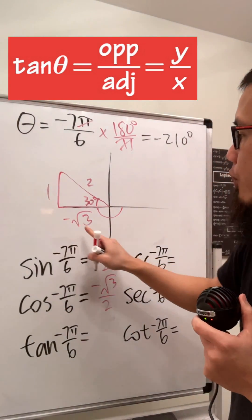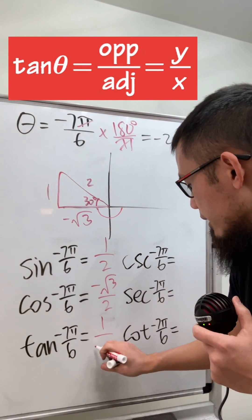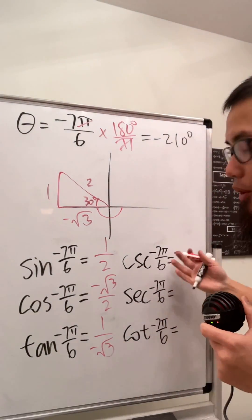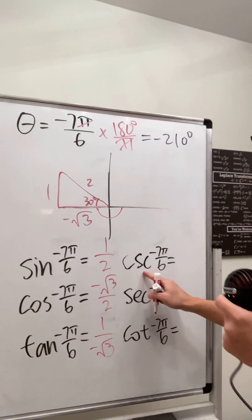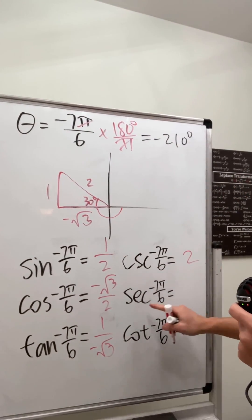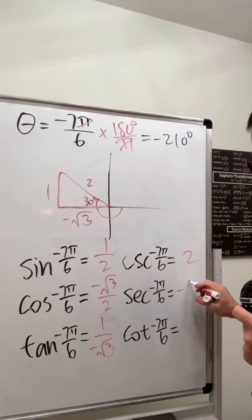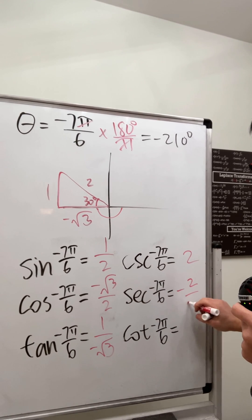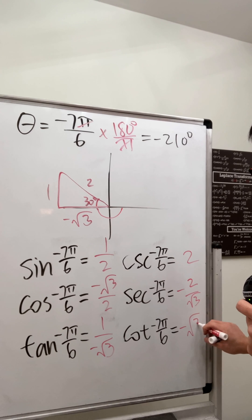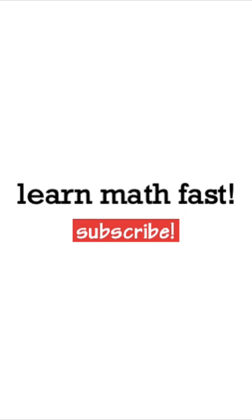Tangent is y over x, which is 1 over negative square root of 3. For the reciprocal functions: cosecant is 2 over 1, which is 2; secant is negative 2 over square root of 3; and cotangent is negative square root of 3 over 1. Done.